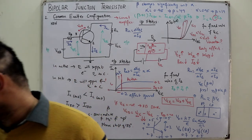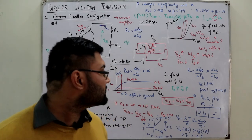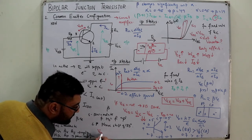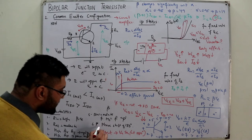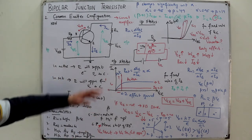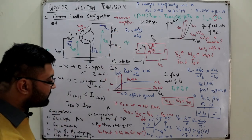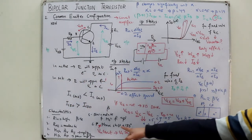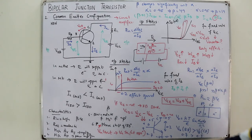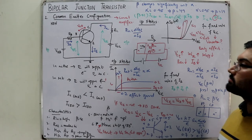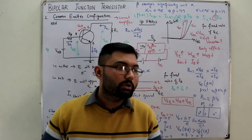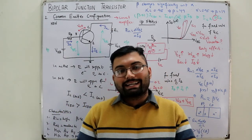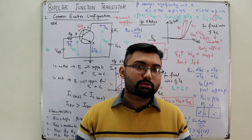Most importantly, the common emitter configuration provides a phase shift of 180 degrees — we will verify this when analyzing circuits. When the input is Vm·sin(ωt), the output comes out as Vm·sin(ωt + 180°). The two key properties are: first, common emitter is mostly used as a current amplifier; second, it is the only configuration that provides a 180-degree phase shift. We will see this in greater detail in upcoming chapters. That's it for this video — see you in the next lecture on the common collector configuration.